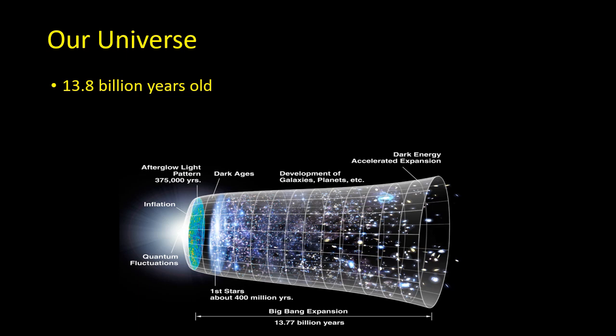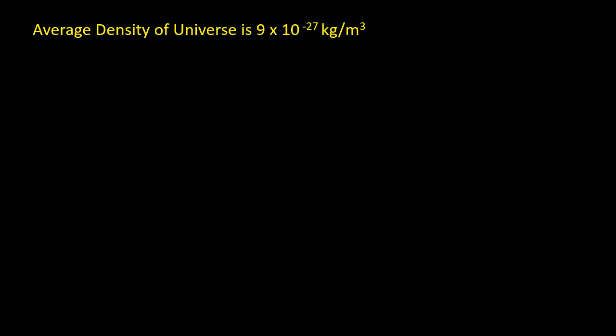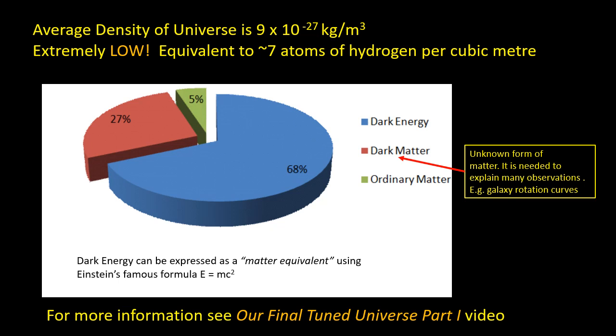We believe our universe is 13.8 billion years old. It began in a state of exceedingly high density, which we call the Big Bang, and it's been expanding and cooling ever since. The universe has an incredibly low average density, equivalent to only seven atoms of hydrogen per cubic meter, and is 5% ordinary matter, 27% dark matter, and the remaining 68% is dark energy.